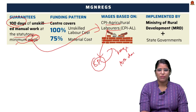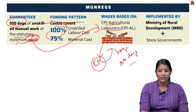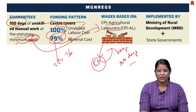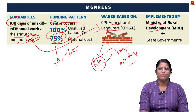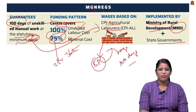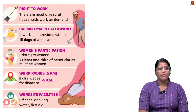A compulsory 100 days of unskilled work will be provided in the rural environment. Regarding the funding pattern, the centre covers 100% of unskilled labour cost and 75% of material cost, while the remaining 25% of material cost is borne by the state government. Implementation is done by the Ministry of Rural Development, abbreviated as MRD, along with the state government.